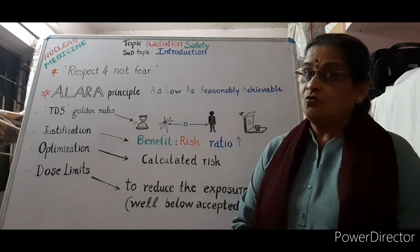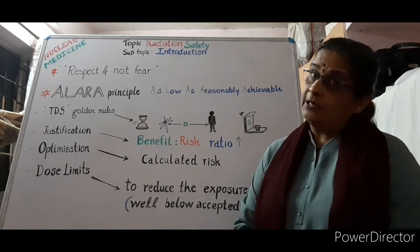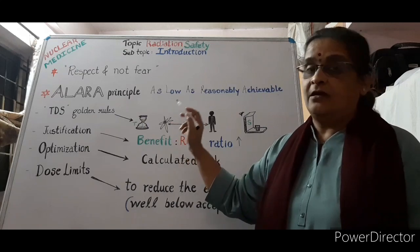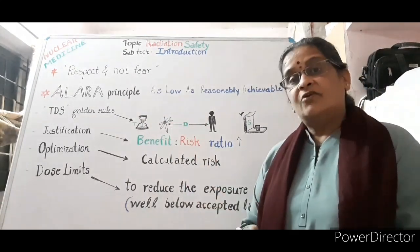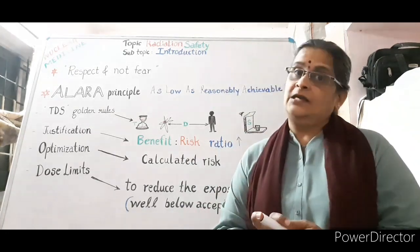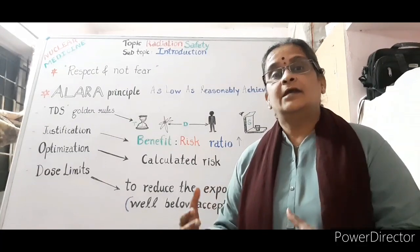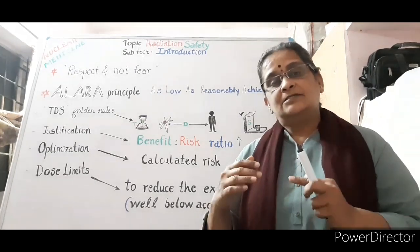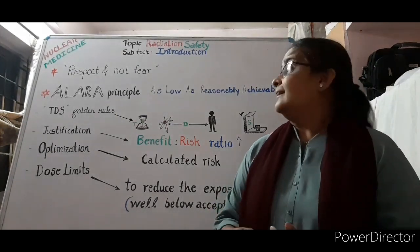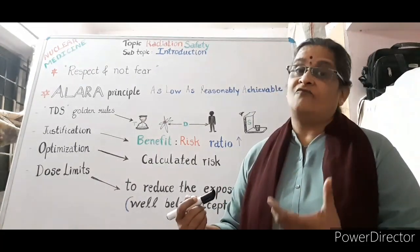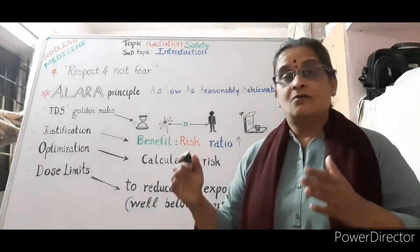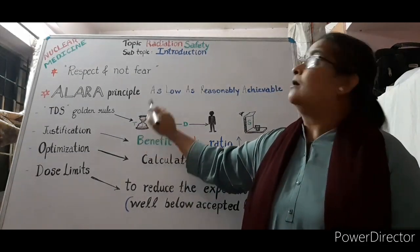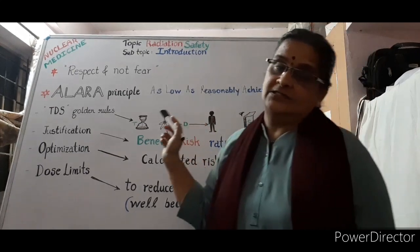T stands for Time — minimum time with nuclear radiations or the radioactive source. For example, when a radiation worker is beginning to handle radioisotopes, they should practice with a dummy — a non-radioactive material similar to what they'll use with radiation. Once they have hands-on experience, the nuclear medicine procedure will be faster, allowing minimum time with the radiations. That is the safety principle there.